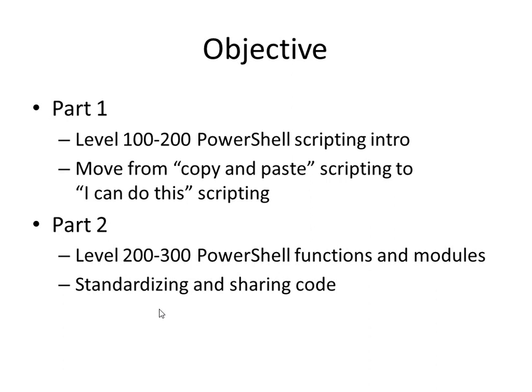This is a two-part session. Part one is kind of 100 to 200 level. We're going to talk about what's the magic that happens inside a PowerShell scripter's head — what is he thinking about when he sits down to write a script? Part two is going to be after lunch, level 200 to 300. We'll go into functions and modules and how you can take your code to the next level.